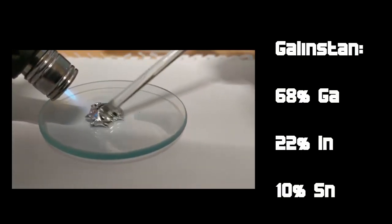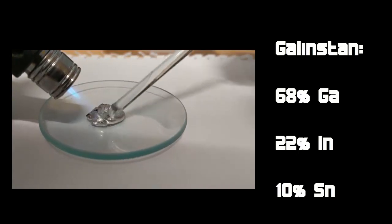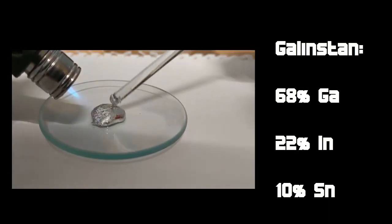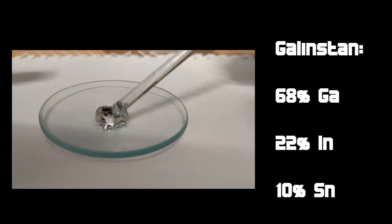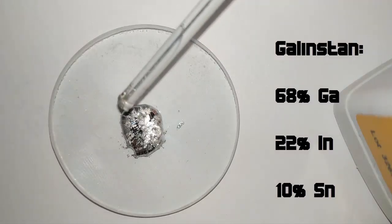Start off by preparing a gallium alloy. This is done by mixing 68% gallium with 22% indium and another 10% tin. Additional heating is required to thoroughly mix things up.